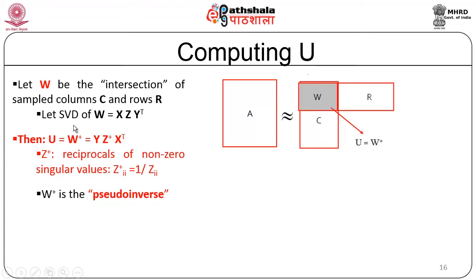Diagrammatically, the intersection of C and R is where the U matrix is highlighted. When SVD provides X, Z, and Y-transpose matrices, the U matrix in CUR is the pseudo-inverse of the intersection of C and R, represented by W. Z-plus acts as the reciprocals of non-zero singular values — meaning the singular values are inverted. W-plus is the notation for the pseudo-inverse, where the inverse of the original singular values are represented, hence it is called the pseudo-inverse matrix.